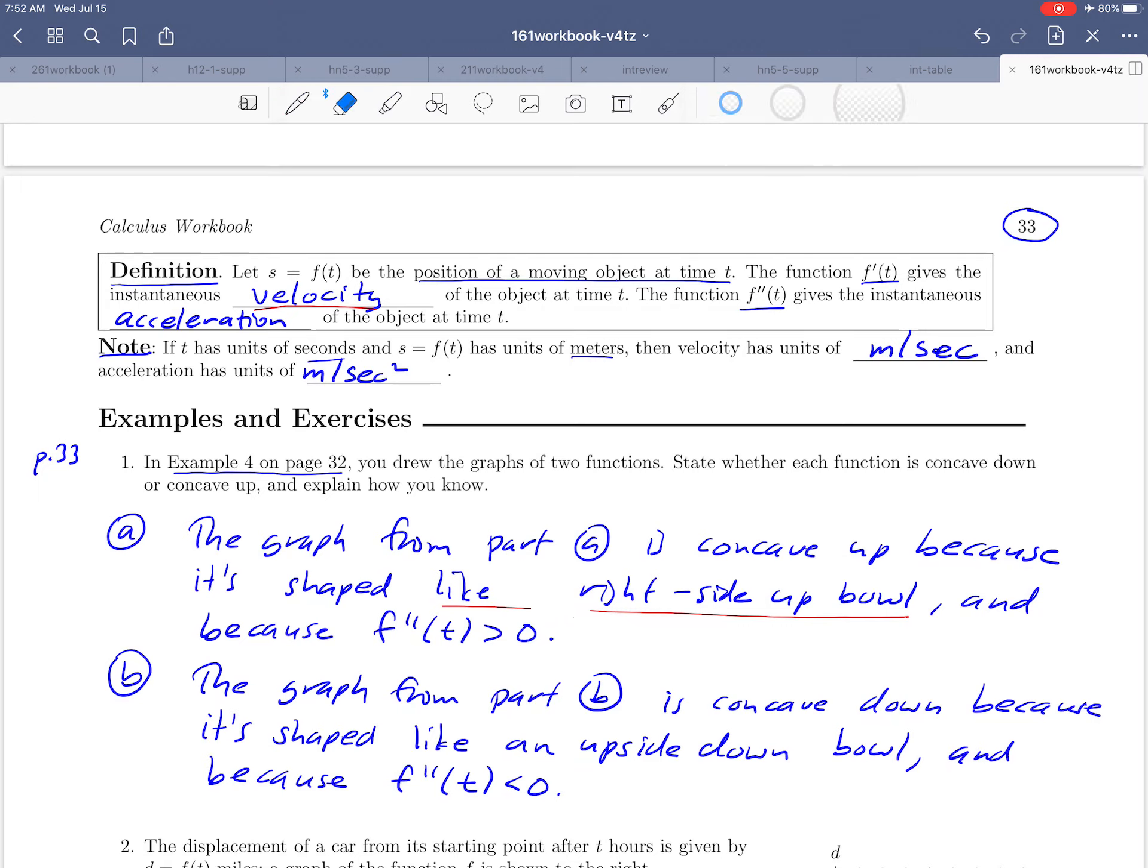Okay let's see how can I do this best here. Okay so it's shaped like part of a right side up bowl. It looks like one half of it. And then the same thing here like part of an upside down bowl. Okay and I think we've got some good descriptions then of why these are concave up and down.